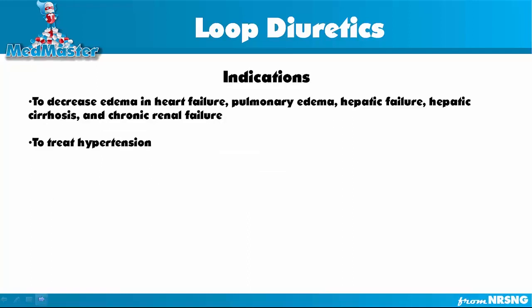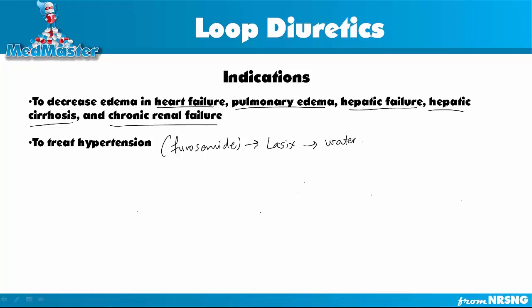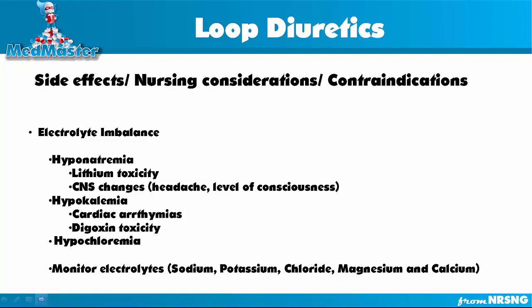Because loop diuretics excrete water, they are used for the prevention of edema. This medication can be used for edema that occurs in heart failure, pulmonary edema, hepatic failure or hepatic cirrhosis, and chronic renal failure. This medication is also used to treat hypertension, especially furosemide, also known as Lasix or a water pill. Physicians use this drug quite often to treat hypertension. Next, we'll talk about side effects, nursing considerations, and contraindications.